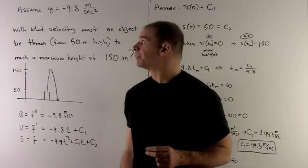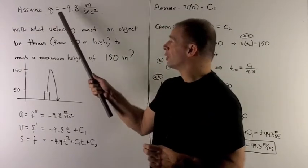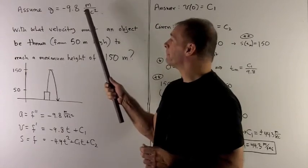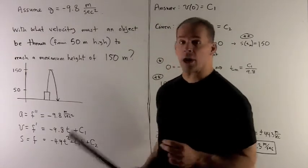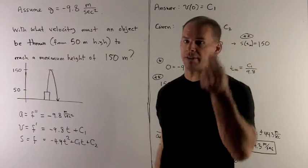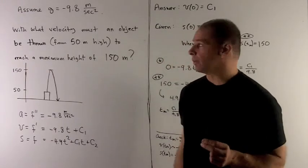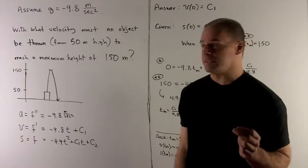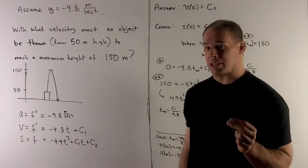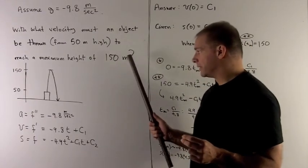Let's look at the motion problem. Assume gravity is -9.8 m/s². Minus sign because gravity pulls down. With what velocity must an object be thrown from a height of 50 meters to reach a maximum height of 150 meters?